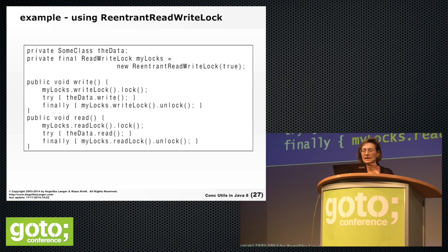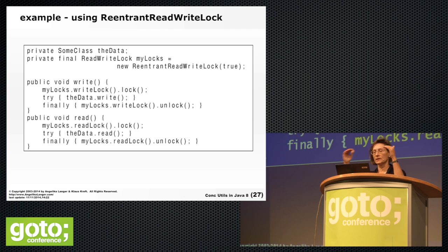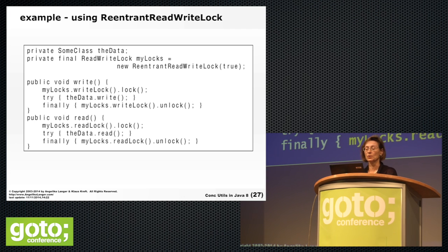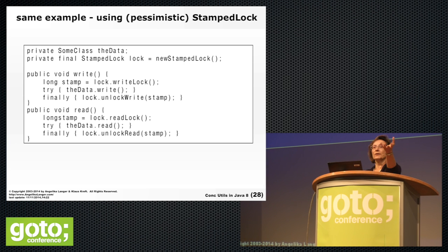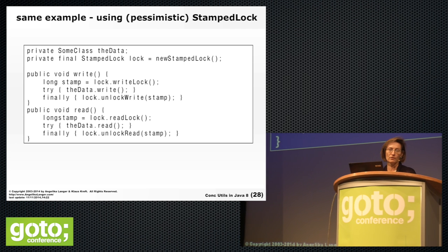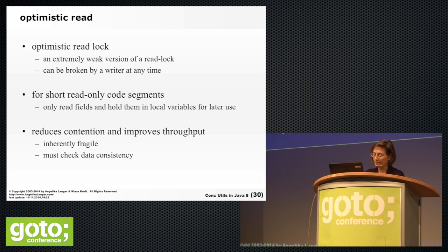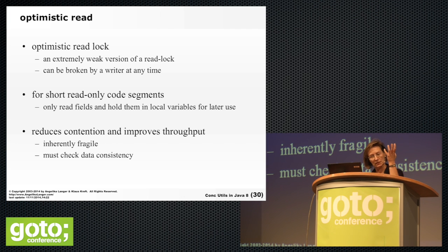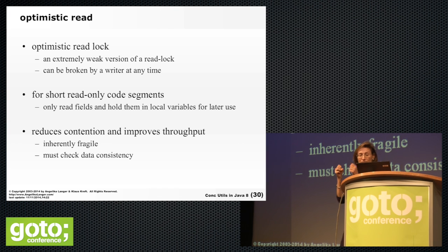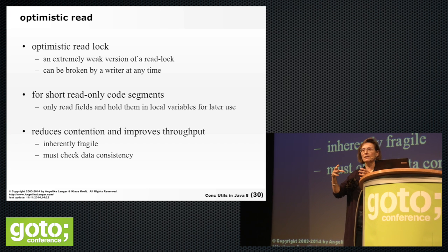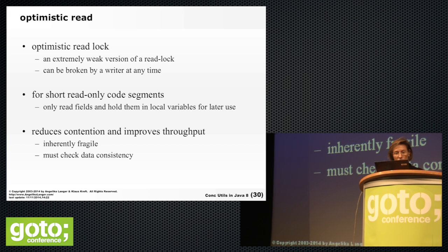In a StampedLock example: my data consists of two primitive integers — partOne and partTwo. I call tryOptimisticRead, which announces that I will read and later call validate to check for concurrent write access. I read the two integers — a very short code segment — then validate. Optimistic reads are predominantly for short read sequences; the longer it takes, the more likely a concurrent write will occur and the validation will fail.